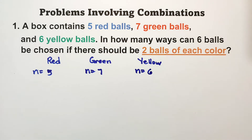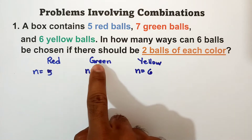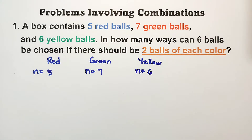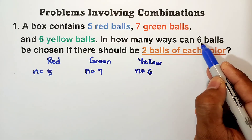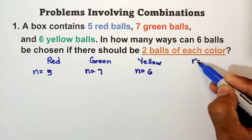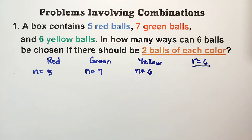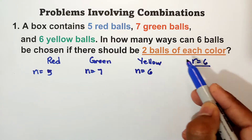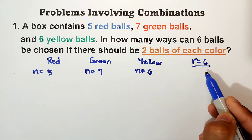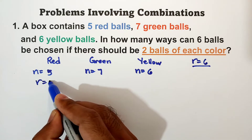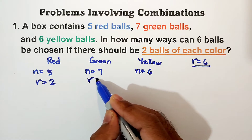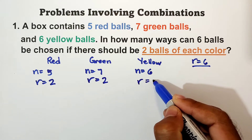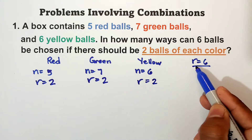Next, identify what R is. How many balls do we need per color? We have red, green, and yellow. Each color, we need two balls. Originally, R is six, but we have to separate it into three colors — red, green, yellow — with two balls each color. So R is equal to two for red, R is equal to two for green, and R is equal to two for yellow. Total of six.